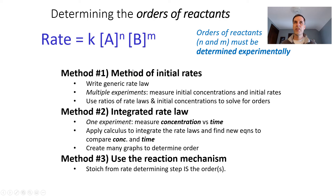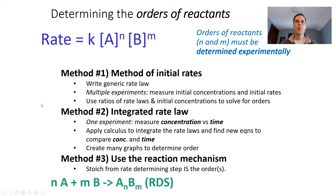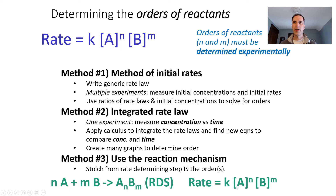There's a third way to determine rate laws, and I want to be cautious here. We can determine rate laws from mechanistic steps. If we have an elementary step where some molecules of A react with B, and this is our rate-determining step (RDS), then the rate equals k times [A]^N times [B]^M. Because usually only two or three things ever collide, N and M are likely small numbers like 1.